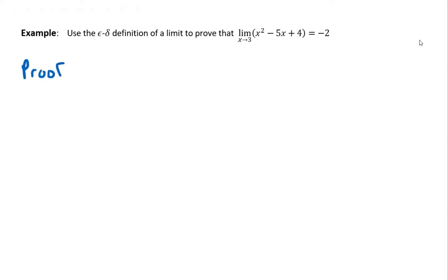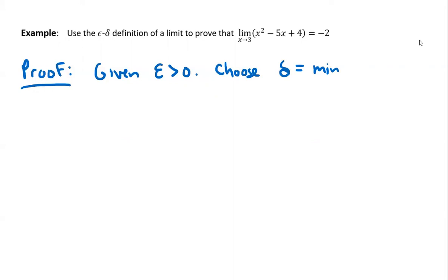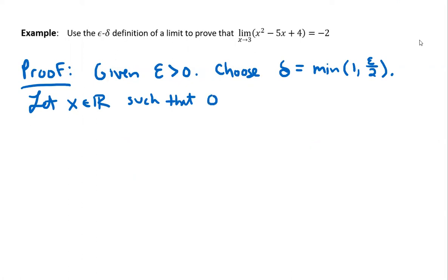Here is our formal proof. Given epsilon greater than zero, we choose delta to equal the minimum of 1 and epsilon over 2. Let x belong to the real numbers such that 0 is less than the absolute value of x minus 3, which is less than delta, which equals the minimum of 1 and epsilon over 2.